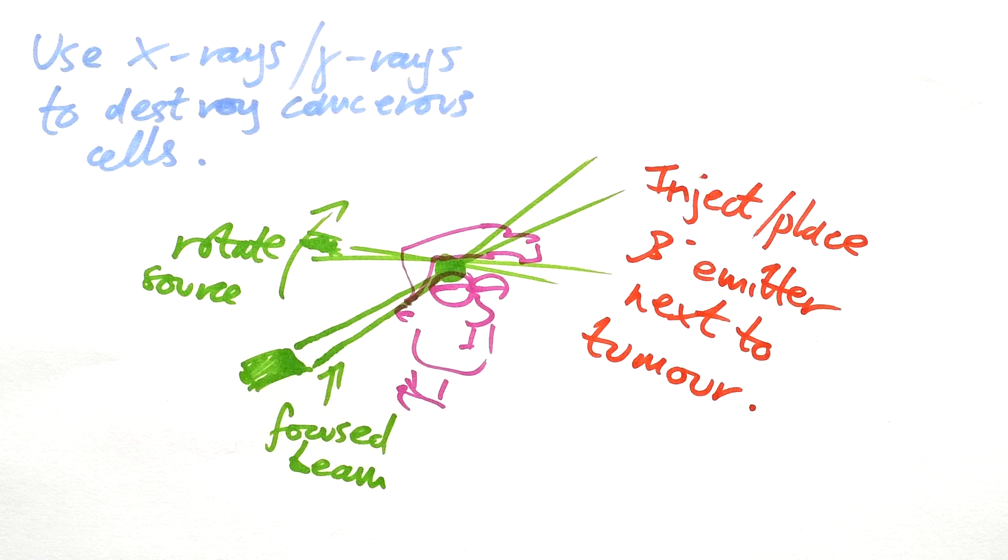Again, it is a possibility that it could cause damage to the healthy cells next to it. But like we said, with a lot of these things, the risk is worth it. So that's a bunch of different ways that radiation or rather ionising radiation is used in medicine. I hope that's been useful. If it has been, then please leave a like. If you have any comments or questions, put them down below and I'll see you next time.